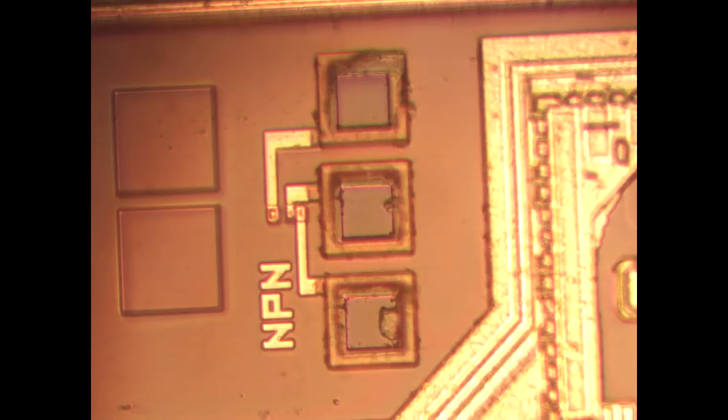In terms of trying to figure out whether it's a CMOS process or bipolar process, they've really made it easy here. Looks like they put down a test transistor up in the upper left corner. Let's zoom in. You can see it's marked NPN, so clearly a bipolar process.